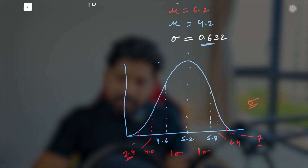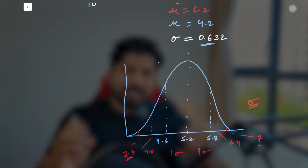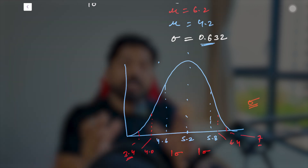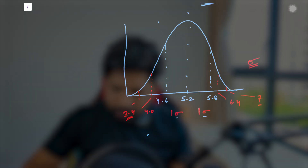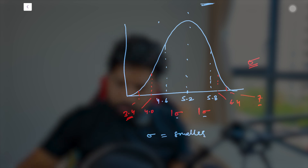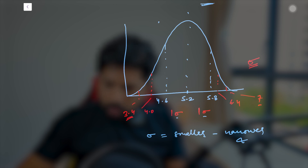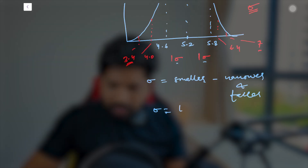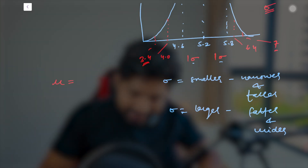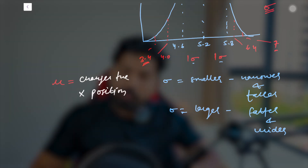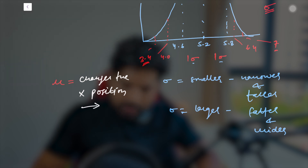The standard deviation decides the shape of the curve — it tells us how the data in the distribution is spread. If sigma is smaller, the curve will be narrower and taller. If sigma is larger, the curve will be fatter and wider. Mu is the mean and it changes the X-axis position — increase the X value and the curve shifts right; decrease it and the curve shifts left. These are the two parameters you can tweak.